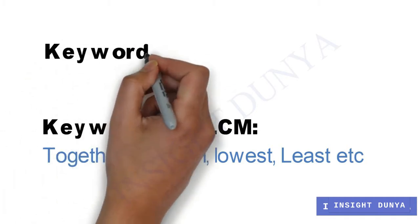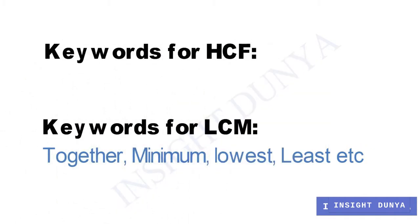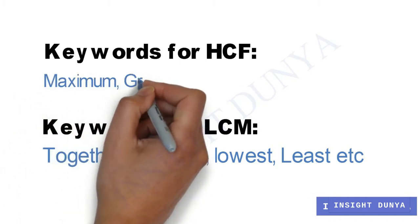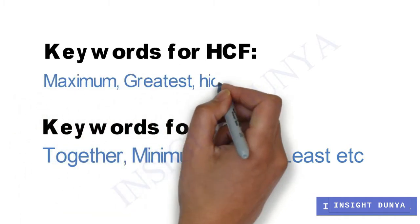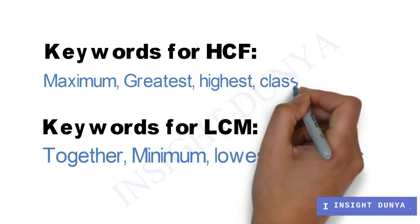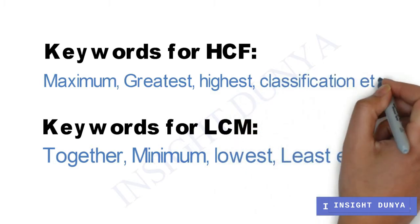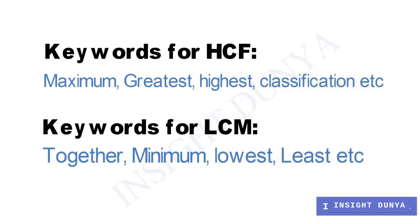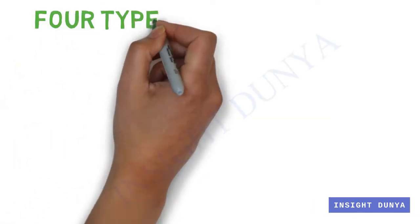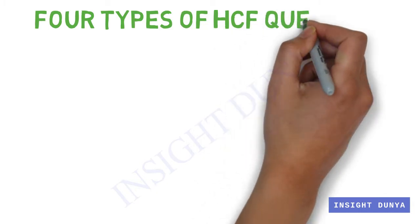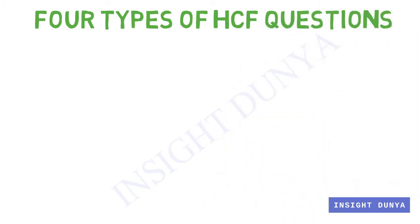Keywords for HCF: unlike LCM, if the question has words like maximum, highest, greatest, largest, distribution, classification, etc., then one needs to find the Highest Common Factor of the given numbers. As we have learned all the basic points, now we are going to solve four kinds of HCF questions which are commonly asked in various kinds of tests.